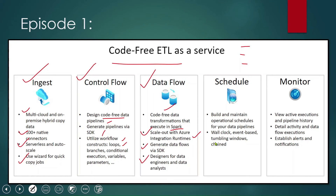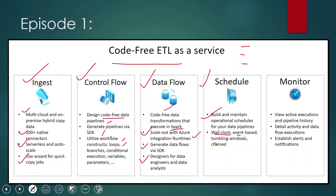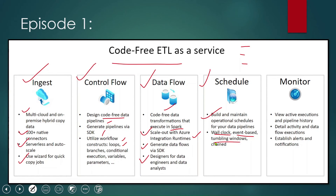For scheduling, we can build triggers and schedule pipelines based on wall clock time or based on events. For example, if a file arrives in Blob Storage, we can trigger a pipeline based on that event. We can also use tumbling window triggers — for instance, if we want to run a pipeline once another pipeline has completed successfully, we can go ahead with tumbling window triggers.